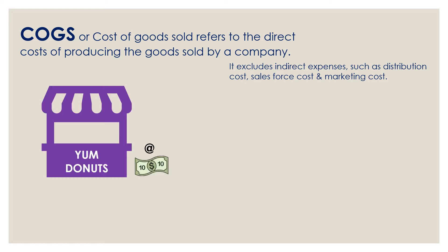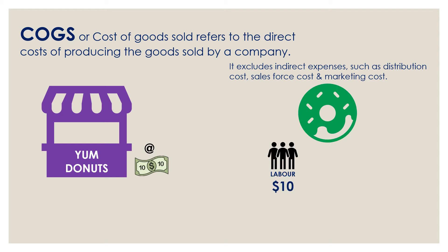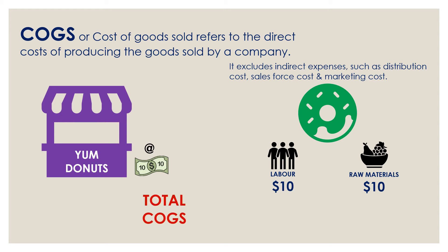Now we already know about our company Yum Donuts, which is manufacturing donuts. To make these donuts, the company spent about $10 in labor cost and also spent $10 in sourcing the raw material. So the COGS for Yum Donuts would be $10 plus $10, which is a total of $20.